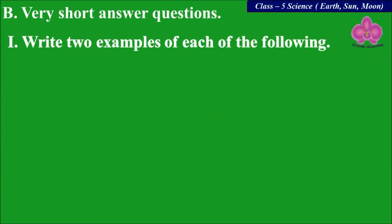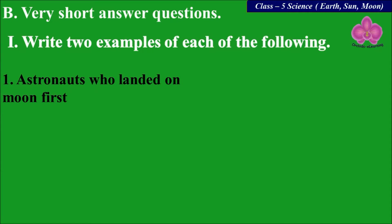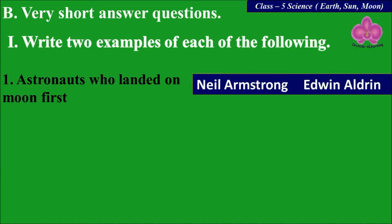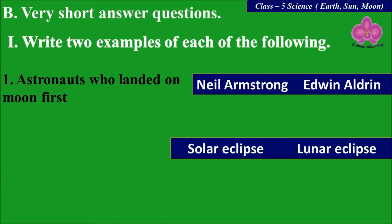Next: write two examples of each of the following. First, astronauts who landed on the Moon — Neil Armstrong and Edwin Aldrin. Types of eclipse — Solar eclipse and Lunar eclipse.